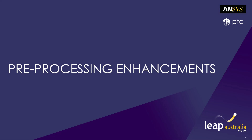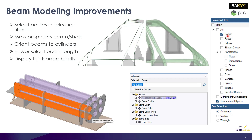Moving on to some of the pre-processing enhancements. SpaceClaim users will now find they have a body filter that was previously not available as part of their selection criteria. There's been an improvement with beam processing in SpaceClaim where you can now select a beam and obtain its mass properties, orient beams to cylinders, and if you use the power select option, you can now also select beams based on length. SpaceClaim also now has the option to display thick beams and shells, similar to the experience in ANSYS Mechanical.